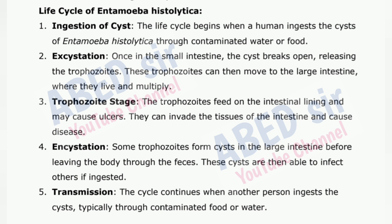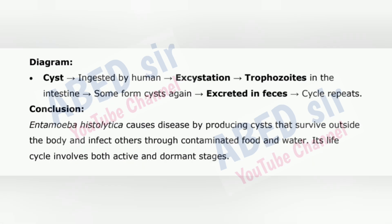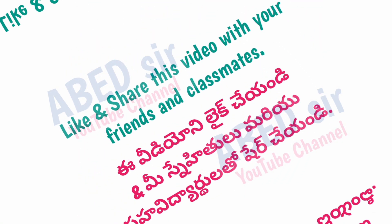5. Transmission — The cycle continues when another person ingests the cysts, typically through contaminated food or water. Diagram: Cyst ingested by human → excystation → trophozoites in the intestine → some form cysts again → excreted in feces → cycle repeats. Conclusion: Entamoeba histolytica causes disease by producing cysts that survive outside the body and infect others through contaminated food and water. Its life cycle involves both active and dormant stages.